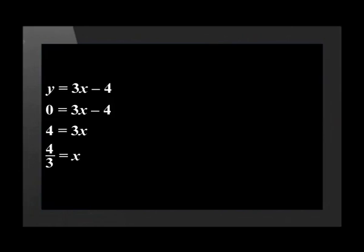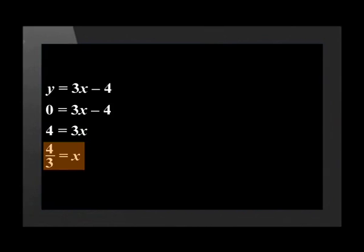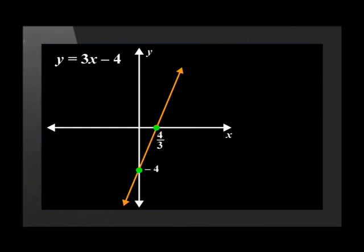Whenever we sketch the graph of a straight line, we also need to put down the point where the straight line cuts the x-axis. This point is called the x-intercept. To find the x-intercept, use the equation of the linear function y equals 3x minus 4, and set the y value to 0. Substitute 0 in the place of y and solve the equation for x. We've calculated that x is equal to 4 over 3. Now all that's left to do is to put the value of the x-intercept on the graph, and that makes the graph look and feel complete.